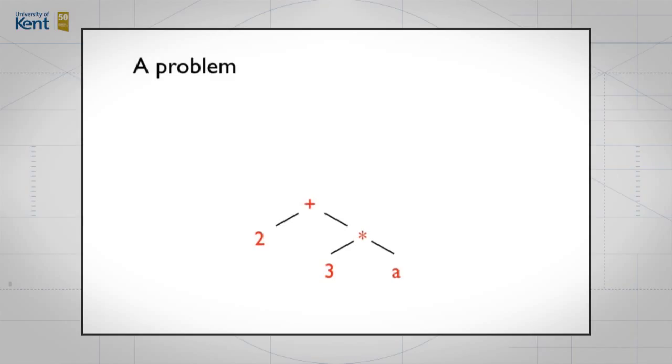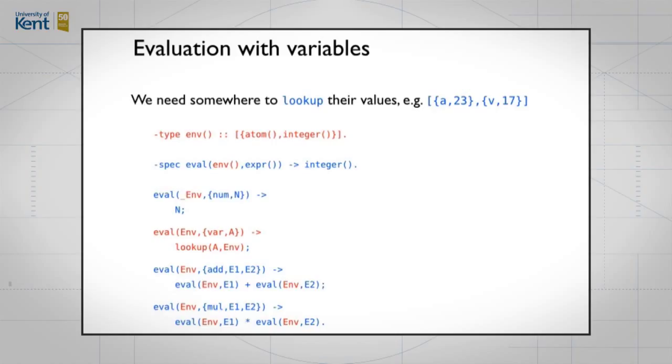So what do I do with this? The answer is I have to add to my evaluator some data structure, something that gives me the value for any variables inside my expression. I do that by adding an environment which combines variables, which are atoms, with integers, which are their values. For example, we have an environment which gives A the value 23 and V the value 17.